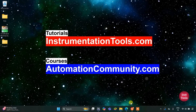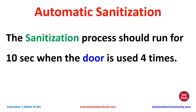Hello everyone, welcome to Automation Community. Today in this video we are going to discuss an example about automatic sanitization. The sanitization process should run for 10 seconds when the door is used four times. There is an unlock button to unlock the door, and when the unlock button is pressed four times, the sanitization process will start for 10 seconds.